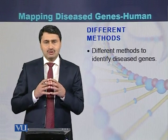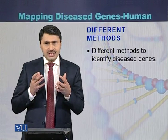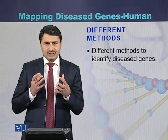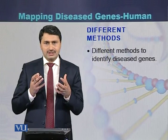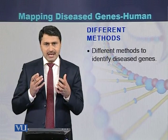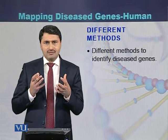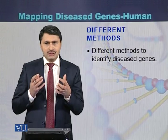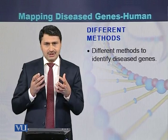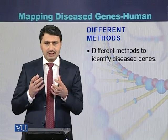In conclusion, there are different types of methods used for identification of disease genes, but the two most common are position independent and position dependent. Nowadays, the position dependent method is mostly used for identification of genes responsible for causing certain phenotypes in humans.